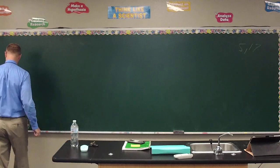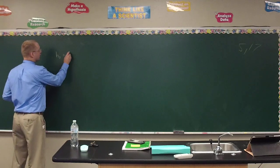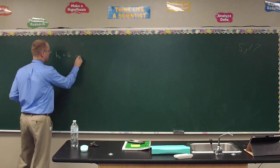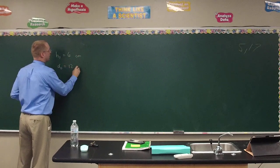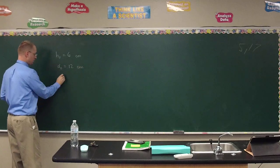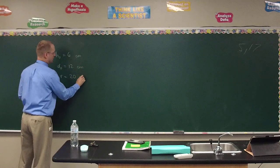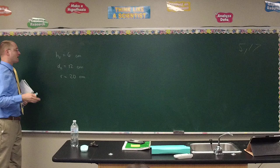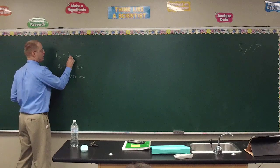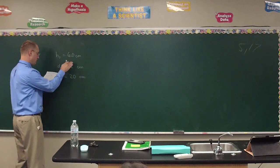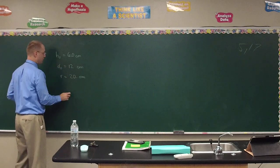An object 6 centimeters high is located 12 centimeters from a concave mirror with a radius of 20 centimeters. Find A, the position, B, the size of the image, and C, the level of magnification. They give us 6.0 centimeter height of object, 12 centimeter distance of object, 20 centimeter radius.